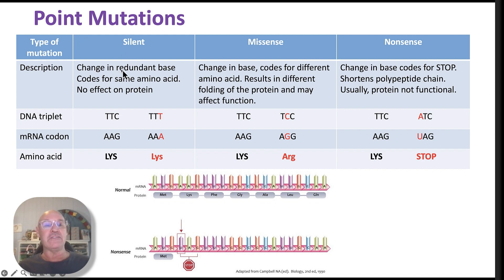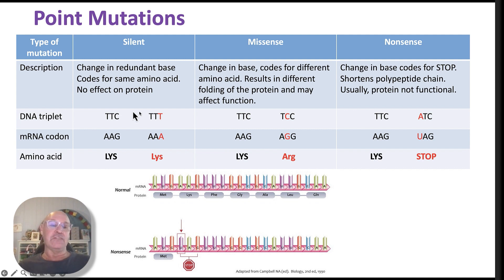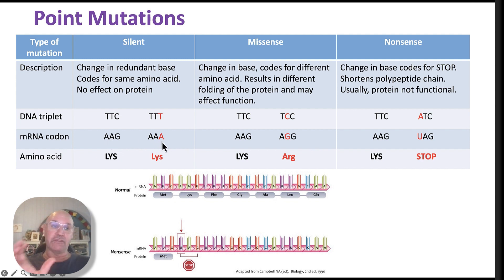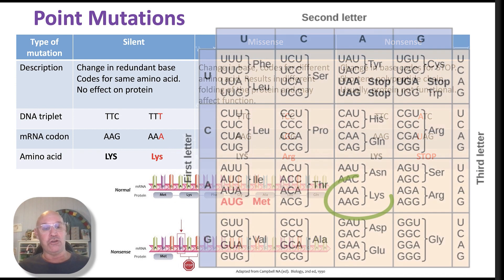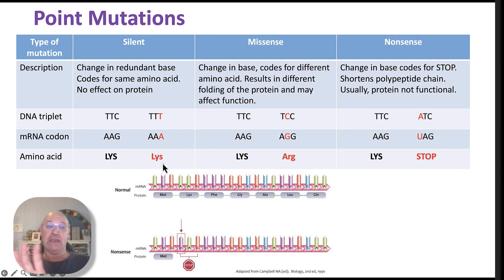The first type is called a silent mutation. We have a change in a single base, but it actually codes for the same amino acid, so there's no effect on the protein. For example, one point mutation changes a C to a T, which changes the mRNA codon from AAG to AAA. But because of the redundancy in the codons, they both still code for lysine — so it's a silent mutation with absolutely no effect on the protein.